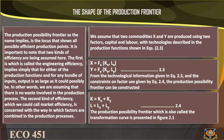The Shape of the Production Frontier. The production possibility frontier, as the name implies, is the locus that shows all possible efficient production points. Two kinds of efficiency are assumed here. The first, called engineering efficiency, implies simply that for either of the production functions and for any bundle of inputs, output is as large as it could possibly be — in other words, there is no waste involved in the production process.